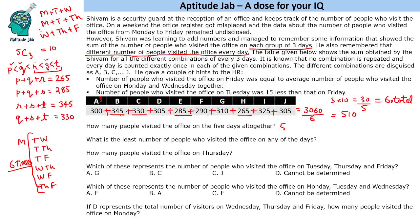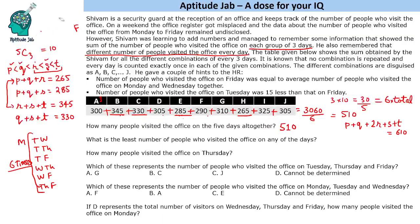We are also asked how many people visited the office on the five days altogether — the answer is 510. Now, if we add the two equations p + q + r = 265 and r + s + t = 345, we get p + q + r + s + t + r = 610. Since the total p + q + r + s + t = 510, subtracting gives r = 100.